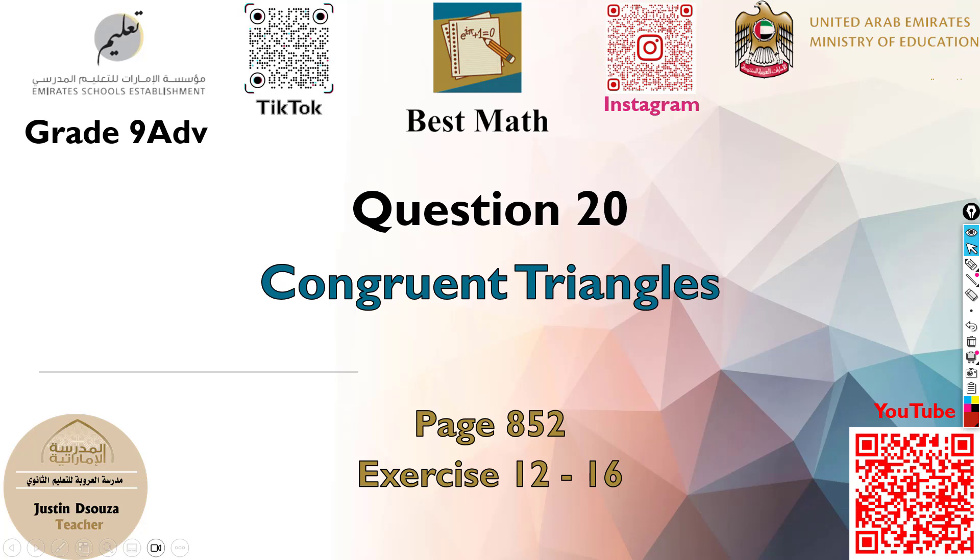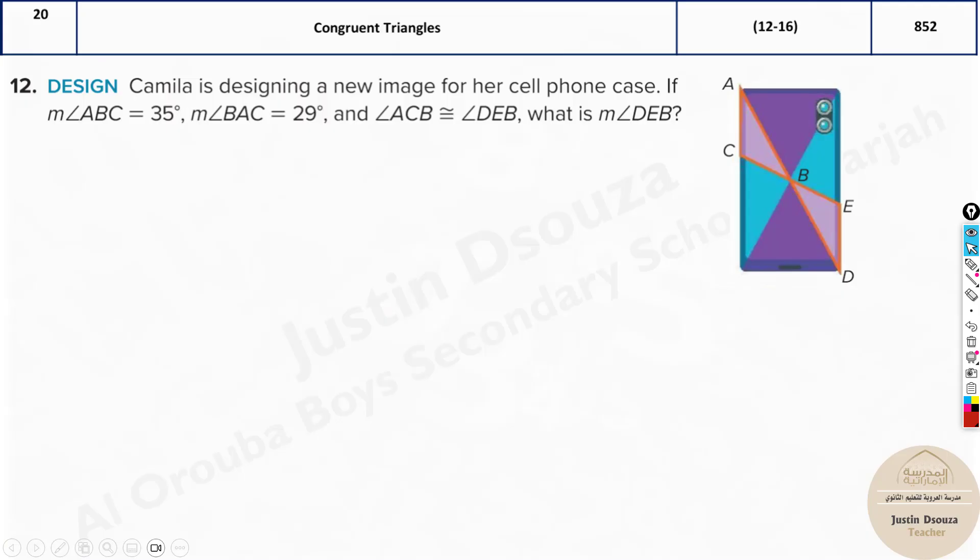Question 20 is about congruent triangles. Congruent triangles means equal triangles. We have real world problems here. Camilla is designing a new image for a cell phone case.